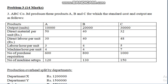Good morning students. In this video I'm going to explain ABC costing problem number 3 for 14 marks. This is the last problem in ABC costing. Let's go through the problem: ABC Company Limited produces three products.